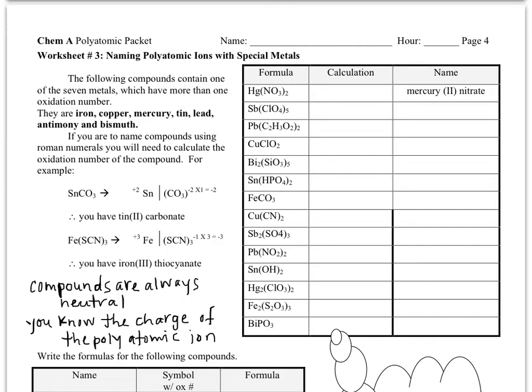This is worksheet number three of the polyatomic packet. Worksheet number three is going to seem a little bit familiar. I want you to think back to the ionic compounds packet to the worksheet where we learned about special metals.